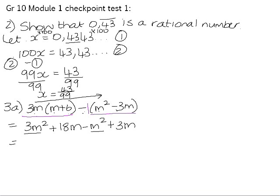If we collect together the like terms, 3m squared subtract m squared is 2m squared, and 18m add 3m is 21m.